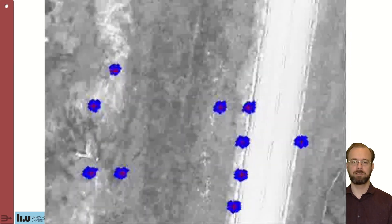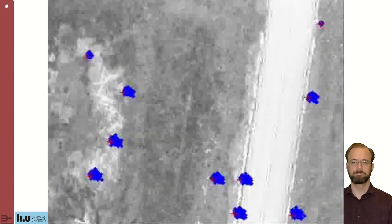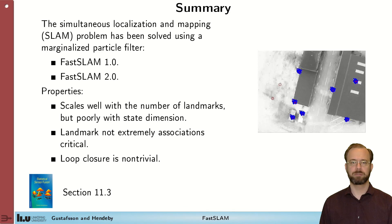We have no loop closure in this case, so we don't see the problem of that. So, to summarize what we've done in this module, we have looked at the simultaneous localization and mapping SLAM problem, and it has been solved using a marginalized particle filter.